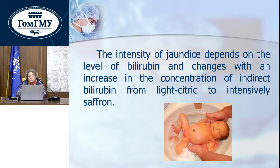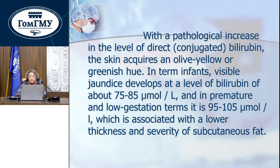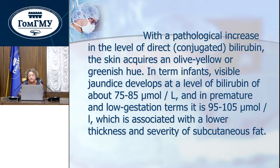The intensity of jaundice depends on the level of bilirubin and changes with an increase in concentration of indirect bilirubin, from light citric to intensively suffered. With a pathological increase in the level of direct or conjugated bilirubin, the skin acquires an olive-yellow or greenish hue. In term infants, visible jaundice develops at a bilirubin level of about 75–85 µmol/L, and in premature infants of low gestational age it is 95–105 µmol/L, which is associated with low thickness and lesser degree of subcutaneous fat.